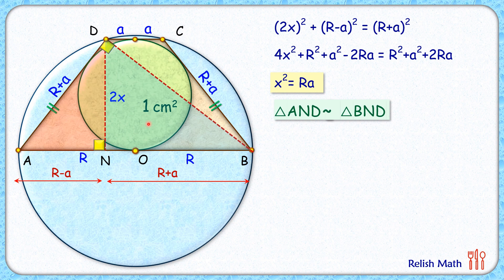Now as the triangles are similar thus the ratio of corresponding sides will be equal. That is DN upon AN equals BN upon DN. Now in this red triangle DN is 2x and AN is R minus a. So 2x upon R minus a equals R plus a upon 2x. Cross multiplying we'll get 4x² equals R² minus a². But x² is nothing but Ra so this will become 4 times Ra equals R² minus a².